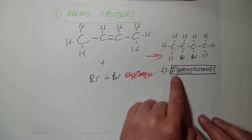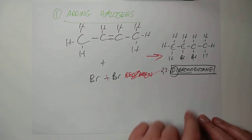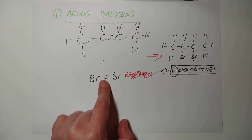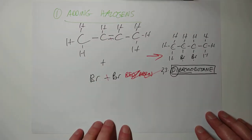So that's number one done. Adding halogens produces a dihaloalkane. Plus, you instantly lose the colour. If you use bromine water, of course, you instantly lose the colour, and that was the test for the presence of double bonds.